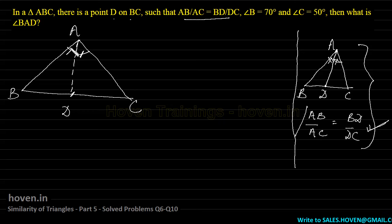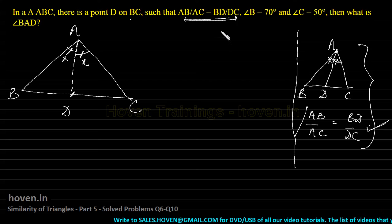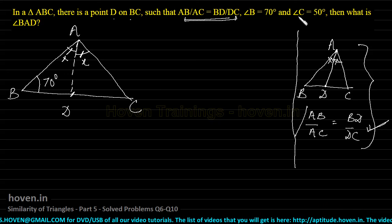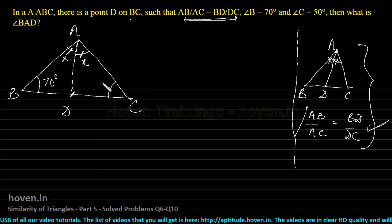Now coming back to our diagram, let us mark this angle as x and this angle as x because both of them are equal by virtue of this relationship. Next, angle B is 70 degrees, let us mark that here, and angle C is 50 degrees.